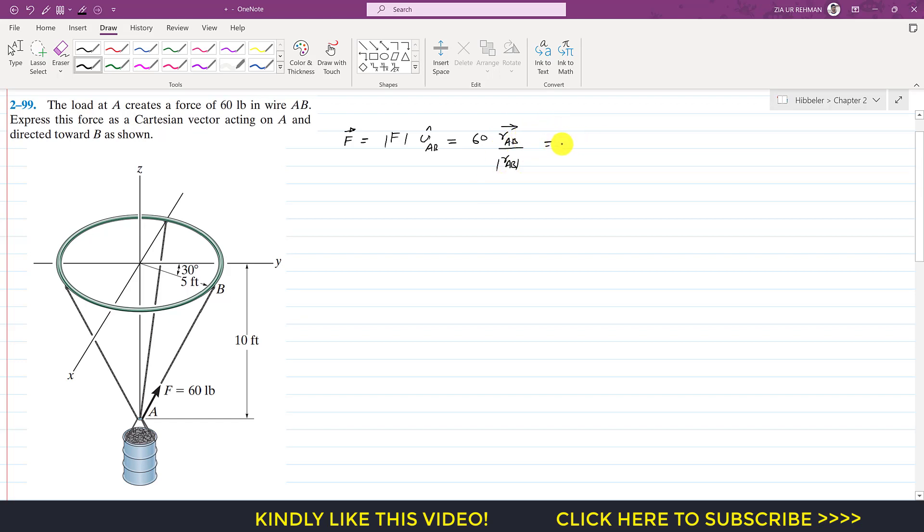The position vector from A to B: to reach point B from point A, we need to move 10 feet in the positive z direction. So I will write 10 feet in the positive k direction.